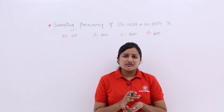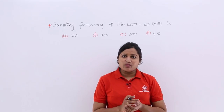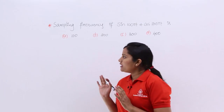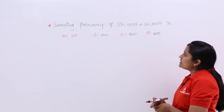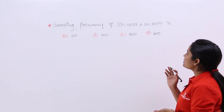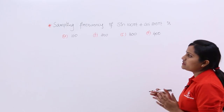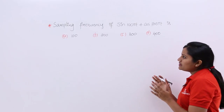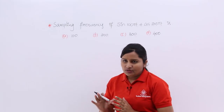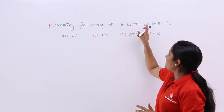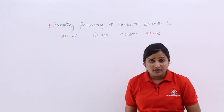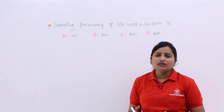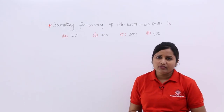In this video, we are going to discuss a sampling frequency related problem. Here you can observe the problem: the sampling frequency of sin(100πt) + cos(200πt) — they have given some combination of sampling frequencies. This signal is sin(100πt) + cos(200πt), and they are asking: if you want to sample that signal, what may be your sampling frequency?